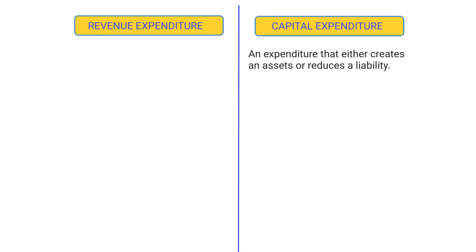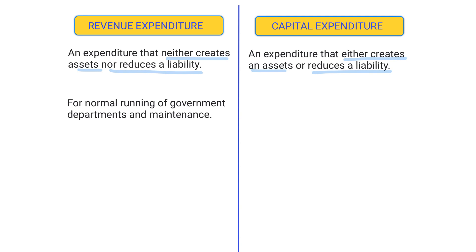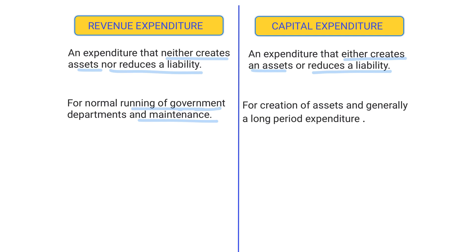Any expenditure that either creates an asset or reduces liabilities is known as capital expenditure. If the expenditure neither creates an asset nor reduces a liability, then it is known as revenue expenditure. Revenue expenditure is basically for running the day-to-day requirements of government departments and for maintenance, whereas capital expenditure results in the creation of assets and is usually a long-period expenditure.